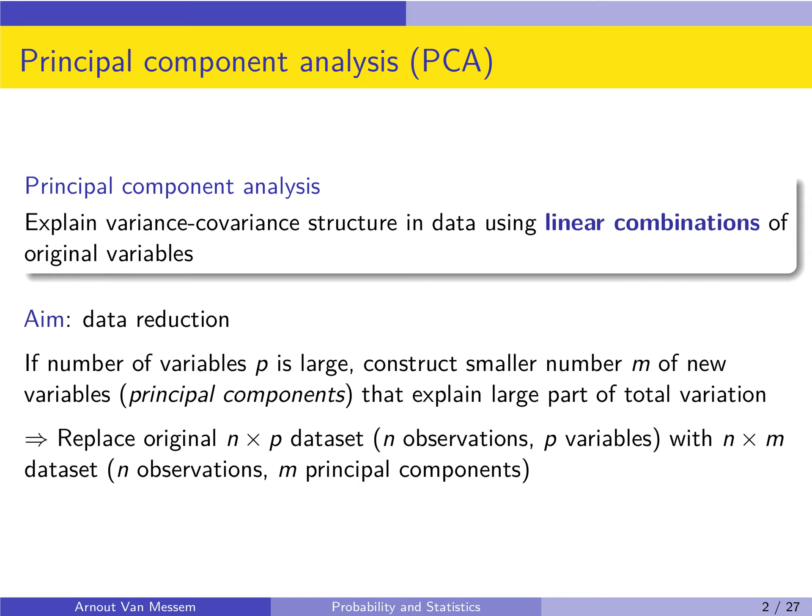The goal of principal component analysis, or where we will use it, is for data reduction. If we have a large number of variables p, what we want to do is find a smaller number of new variables — the principal components — which are constructed using the old variables, but that will still explain the largest part of the total variation.